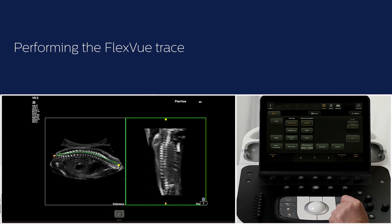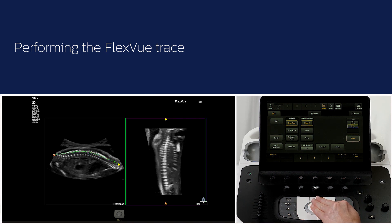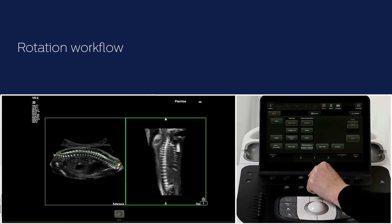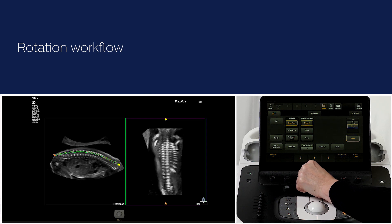The trace types straight and continuous trace will not have this trackball arbitration after setting the FlexView points. Once you complete the trace — curve, straight, or continuous — the trackball can now be used to move the FlexView trace through the anatomy. Use the X, Y, and Z rotary knobs to adjust your image if needed.